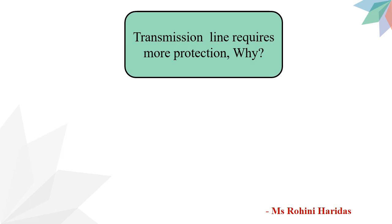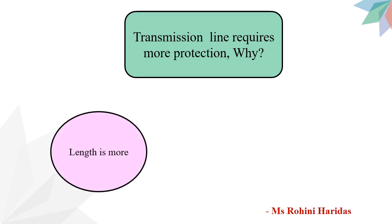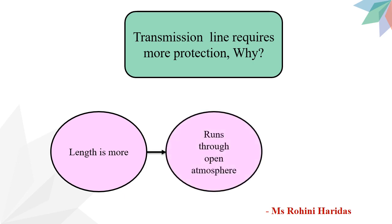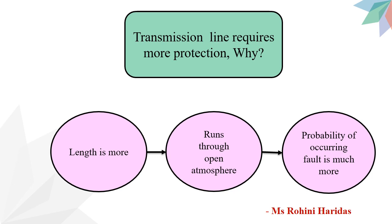Now the question is: why do transmission lines require more protection as compared to other equipment in the power system? The reason is the length of the transmission line is more and it runs through an open atmosphere. Because of this, the probability of a fault occurring is much more as compared to other equipment in the power system, and thus the transmission line requires more protection.